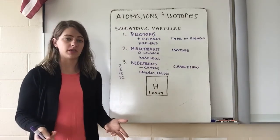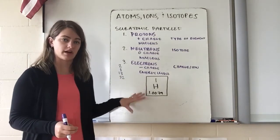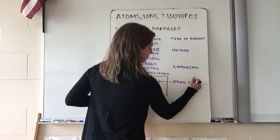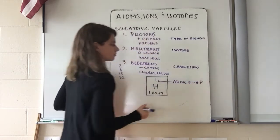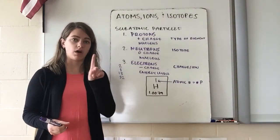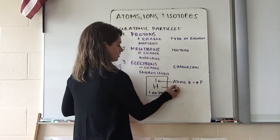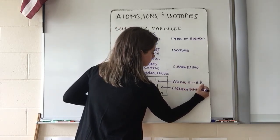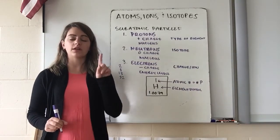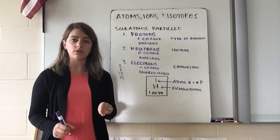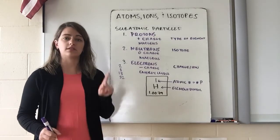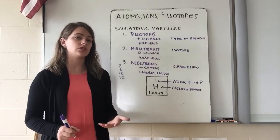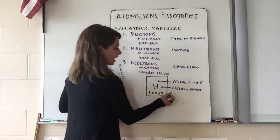We can get a lot of this information from our periodic table. Here's an example square from the periodic table: the big whole number is our atomic number, and that tells us our number of protons. This example is hydrogen — hydrogen has one proton. The symbol in the middle is the symbol for our element. An element symbol can be one capital letter, or one capital and one lowercase letter — it will never be two capitals and never more than two letters.